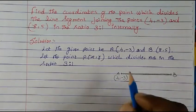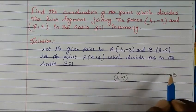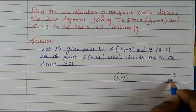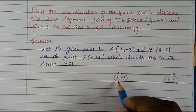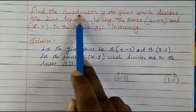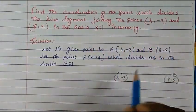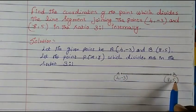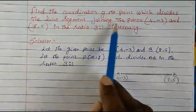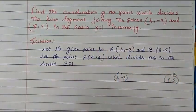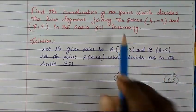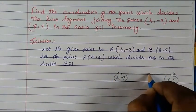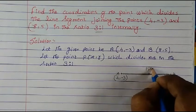When we plot the graph, the x value and the y value together are called the coordinates of a point. So point B is (8, 5) and point A is (4, -3). Now we have to find the coordinate of the point which divides the line segment in a 3:1 ratio internally — meaning there is a coordinate in between that divides this line into a 3:1 ratio. We consider this point as P.